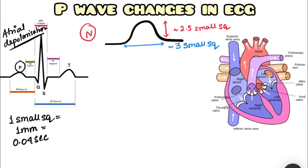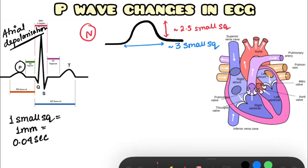This is a normal P wave, contributed by both the right atrium and left atrium. The atrial depolarization includes both right atrial and left atrial depolarization.